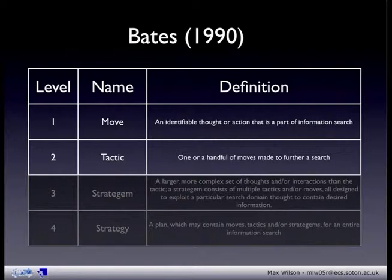Check is another — the ability to check your decisions at any time that you've made previously. Super is the ability to widen your search, and sub is the ability to narrow your search. These are all examples of tactics at Bates' level 2.